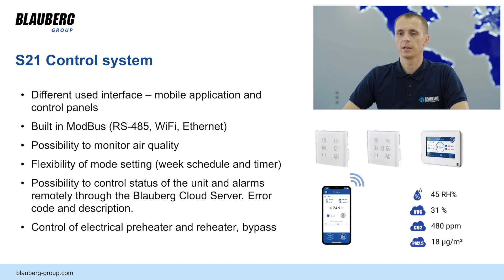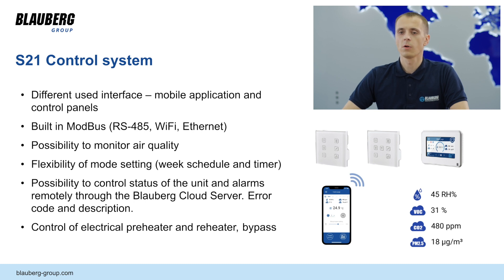Civic uses the S21 control system, which has wide functionality. The integrated Wi-Fi module allows flexible control using the Blauberg AIHU mobile application. The Modbus protocol allows the unit to be integrated into the BMS via Ethernet, RS and Wi-Fi interfaces. The electronics allow the use of air quality sensors, and readings from the sensors automatically change the operating modes of the unit to ensure an optimal microclimate in the room. The Blauberg cloud server allows you to manage the device remotely as well as carry out service.